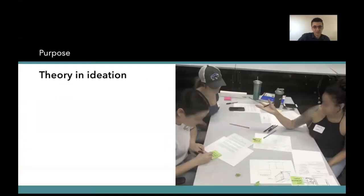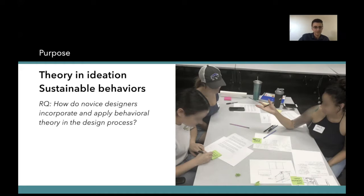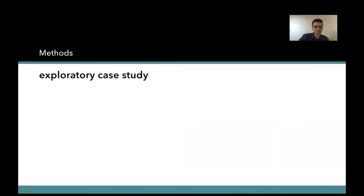The purpose of our study is to see specifically how theory is used in ideation. We do this with novice designers that are senior design students. The context of the study is sustainability behaviors or sustainable behaviors in people. The research question is how do designers incorporate and apply behavioral theory in the design process? The methods that we use are exploratory case study. We work with novice designers, specifically seniors students in Arizona State University, from three programs: interior design, industrial design, and graphic design. We were able to recruit two males and seven females for the session, between 20 and 33 years of age.